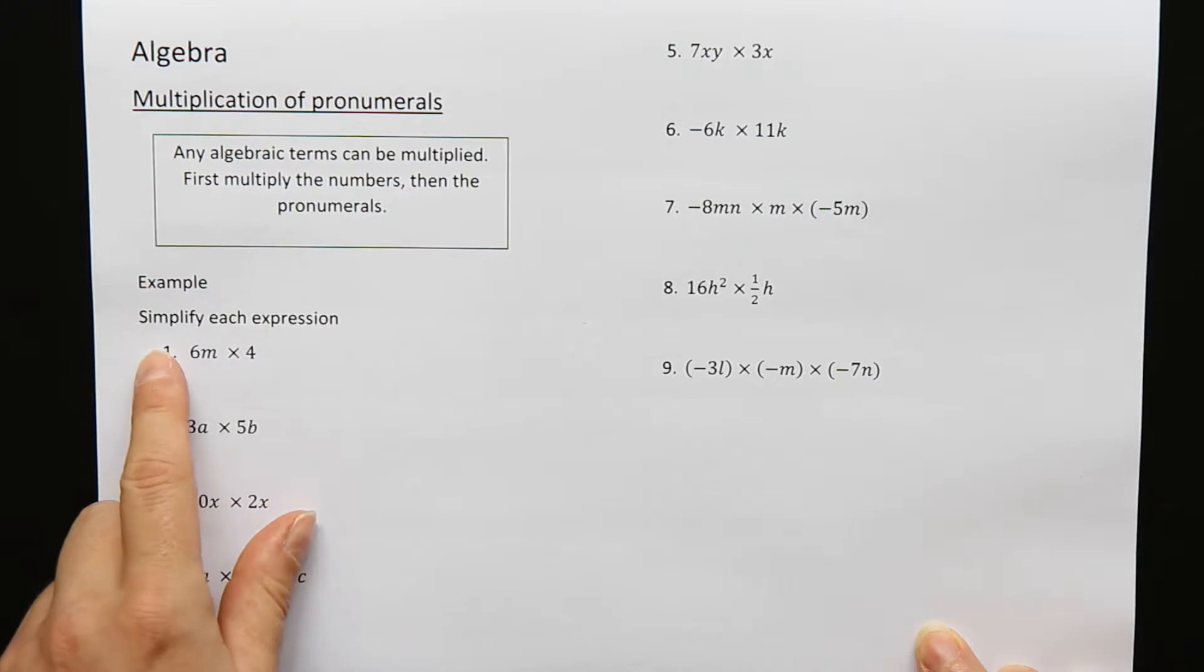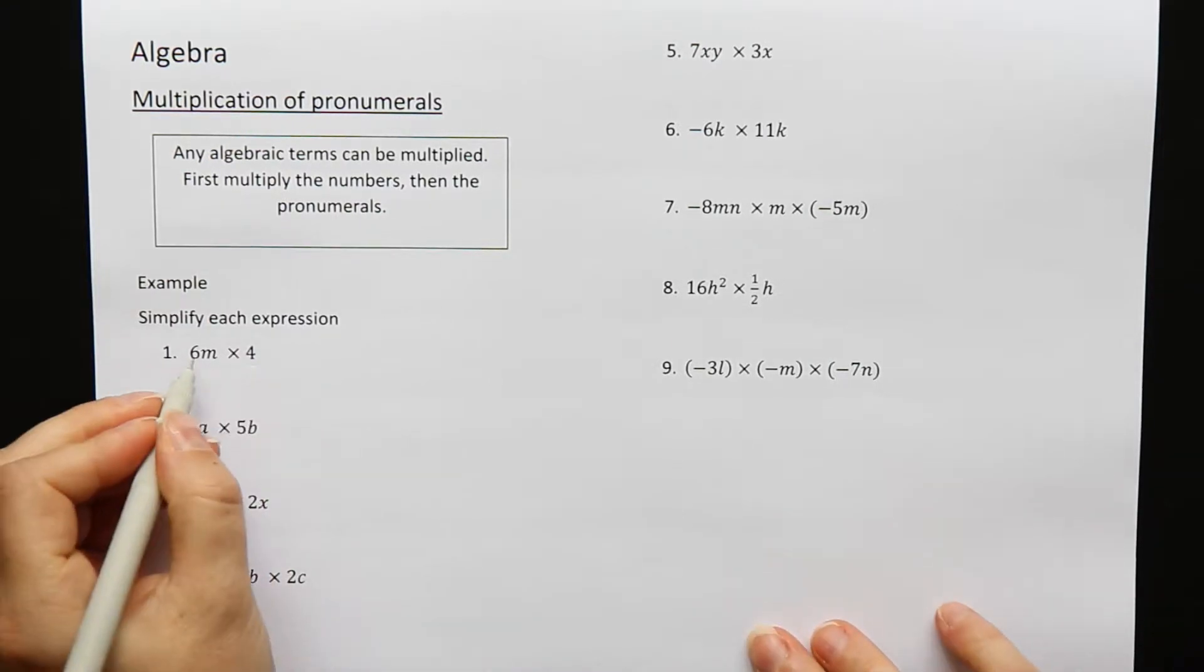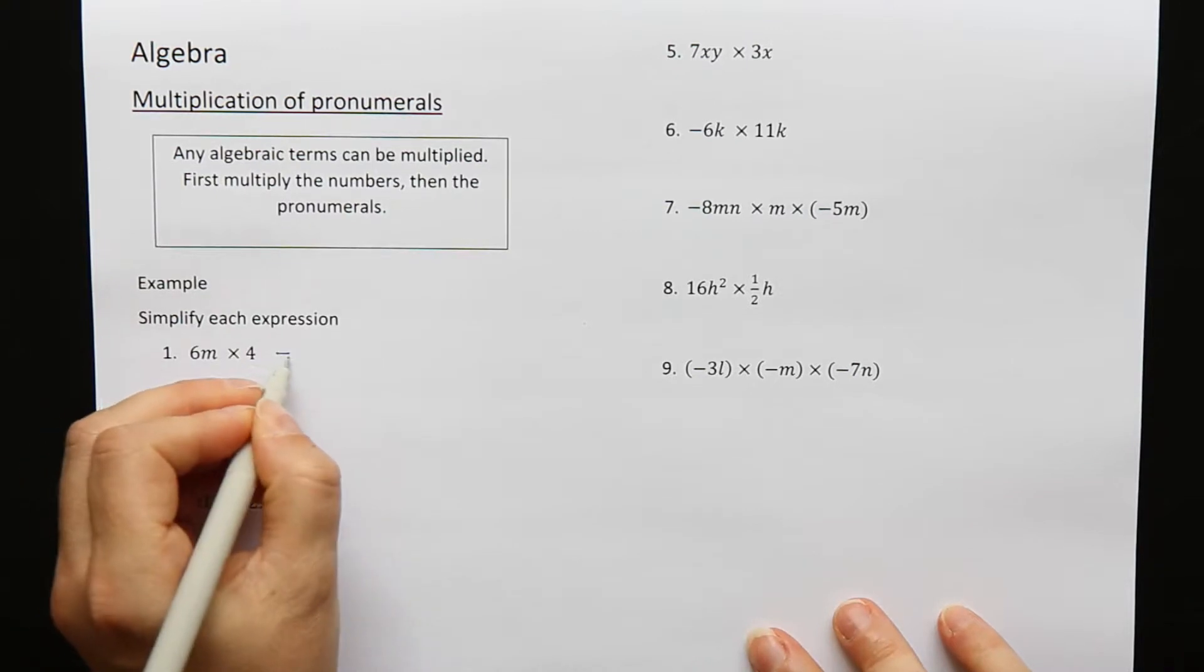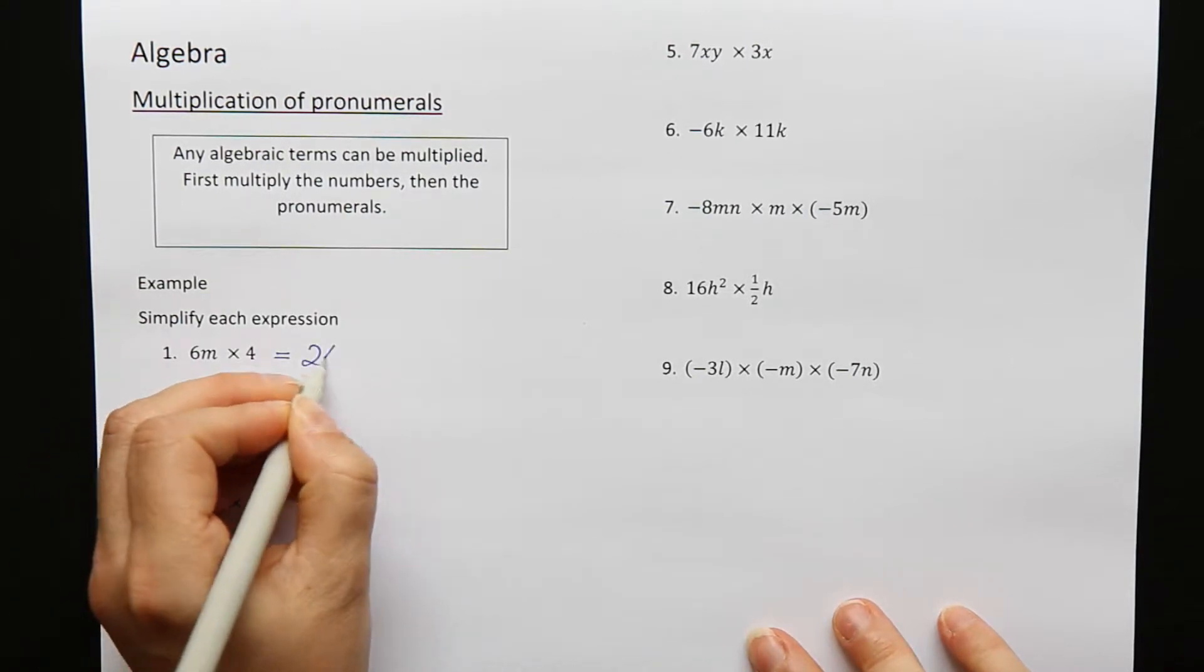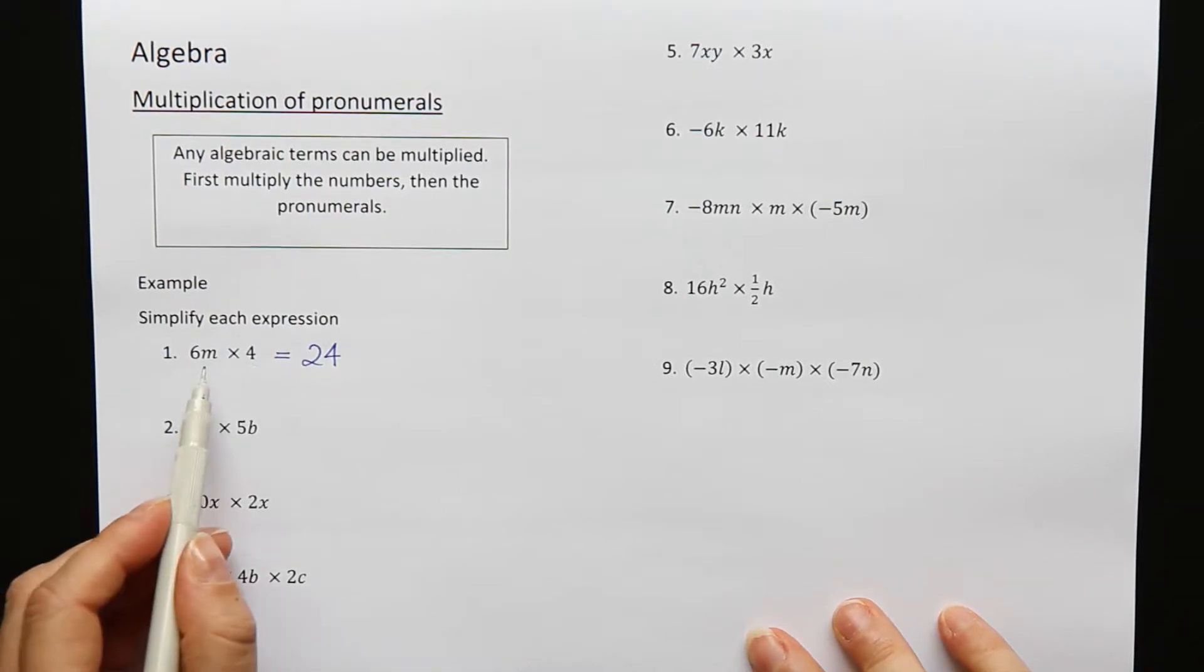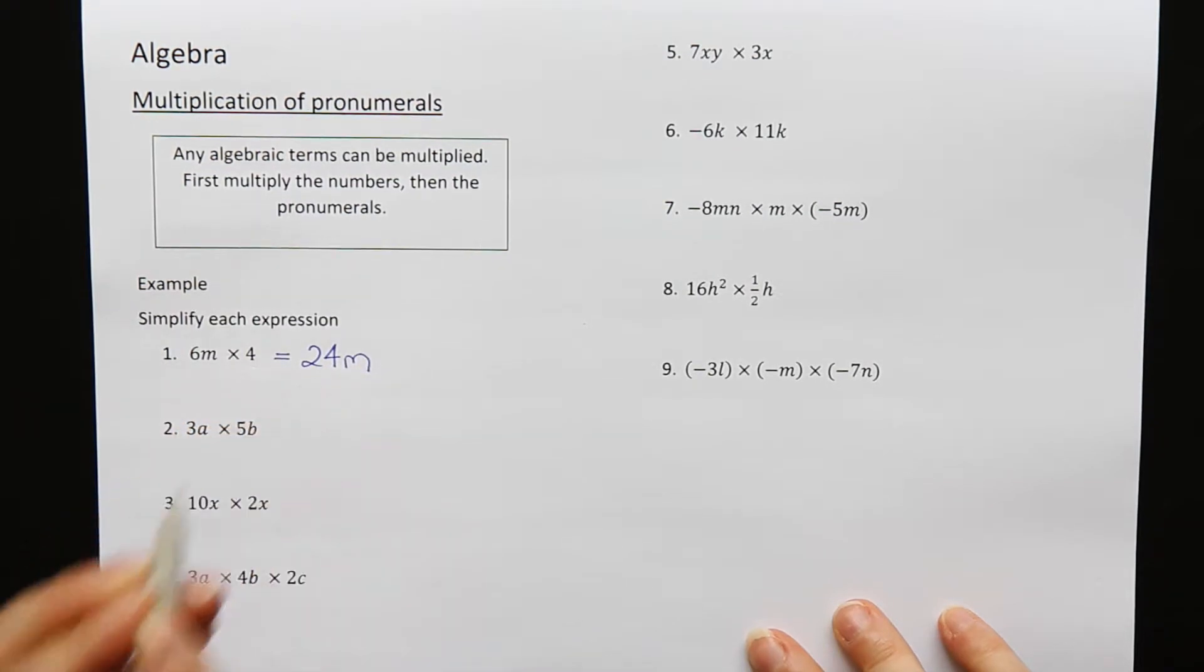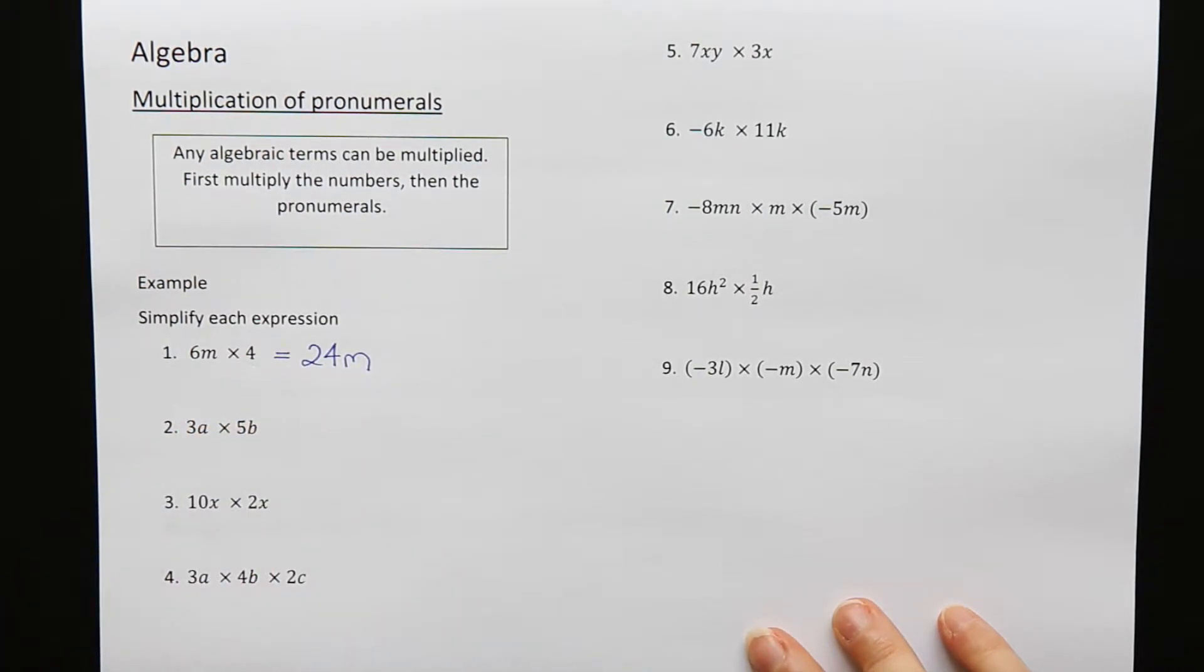There's no like terms, nothing to worry about with that. We just multiply the numbers first and then the letters. Let's have a look at some examples. Simplify each expression. Number one: 6m times 4. First multiply the numbers—6 times 4 is 24. Then multiply the pronumerals. There's only one pronumeral, m, so the answer is 24m.